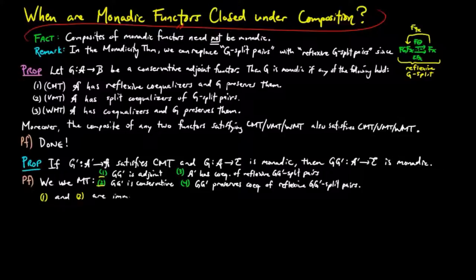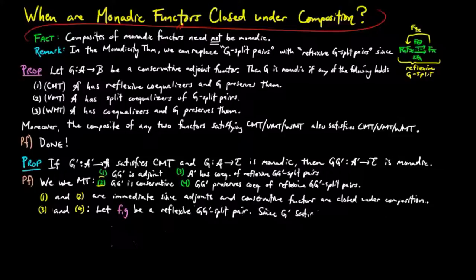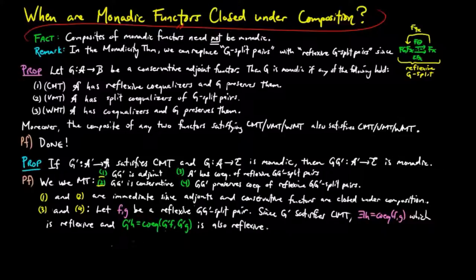1 and 2 are immediate, since adjoints and conservative functors are closed under composition. For 3 and 4, let f, g be a reflexive g, g' split pair. Since g' satisfies CMT, there exists an h, which is equal to the co-equalizer of f, g, which is reflexive, and thus g' h is equal to the co-equalizer of g' f, g' g must also be reflexive. But g' f, g' g is also a g split pair.